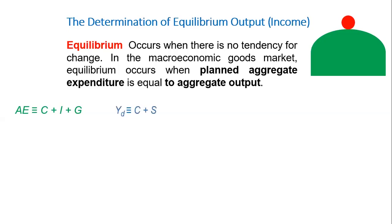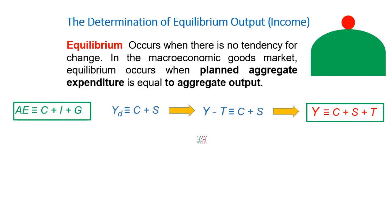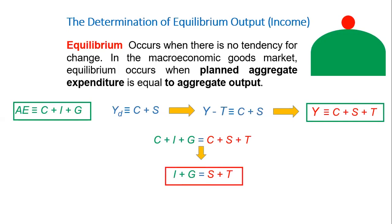We know that YD equals C plus S, and that YD equals Y minus T. This is why output income Y can be written as C plus S plus T. By definition, equilibrium occurs when AE equals Y, meaning C plus I plus G equals C plus S plus T. By subtracting C from both sides, we arrive at I plus G equals S plus T. Here I plus G represents the injections in the economy, while S plus T represents the leakages from the economy.